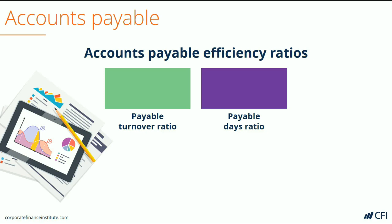Let's start by examining the payable turnover ratio. It's calculated by taking the cost of sales and dividing it by the accounts payable balance, either at the end of the period or an average over an entire period. That indicates how many times in the period the payables turnover.